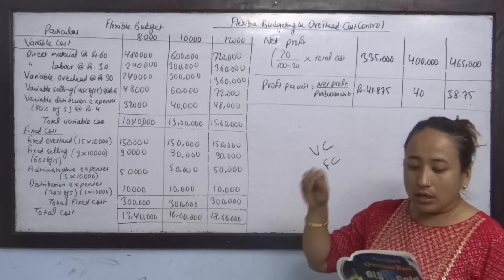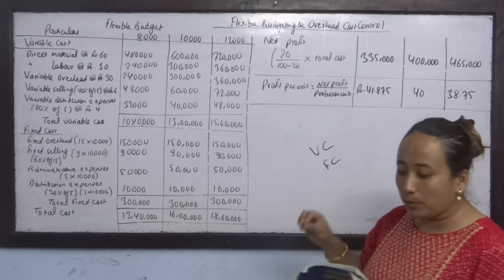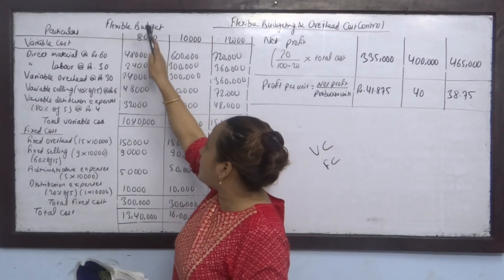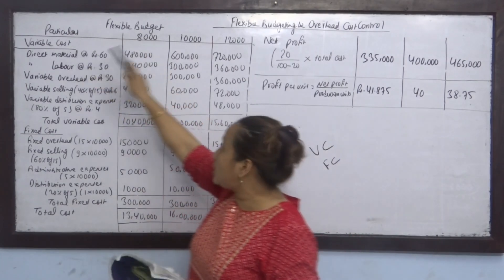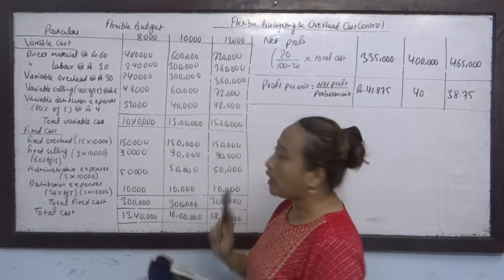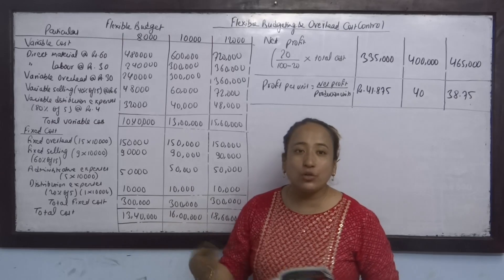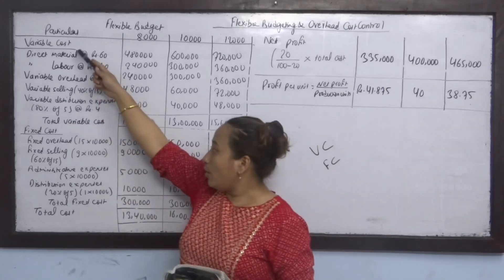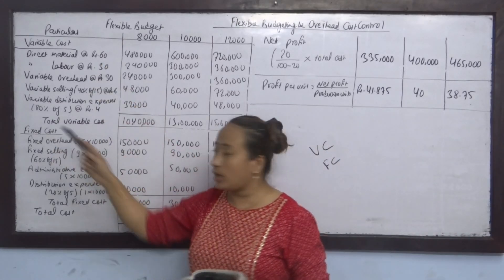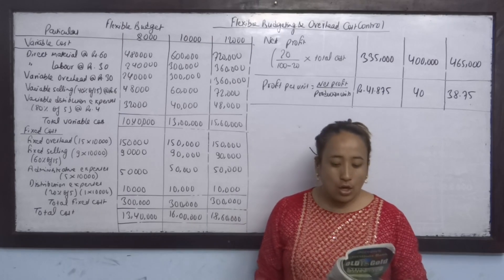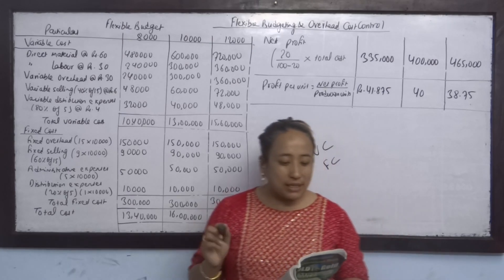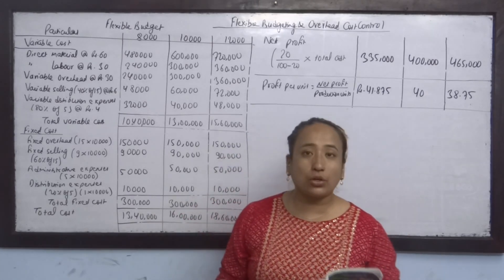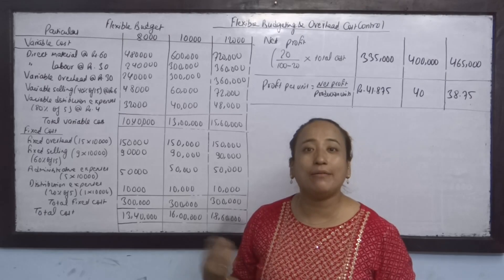What we call a flexible budget is a budget prepared for different activity levels. We prepare particulars for 8,000, 10,000, and 12,000 units. Fixed cost remains the same across levels, while variable cost — such as direct material — changes with units.